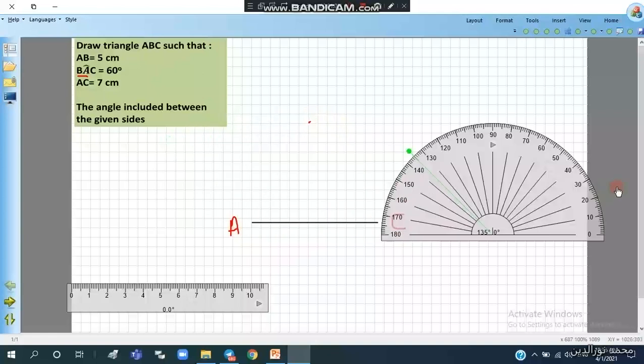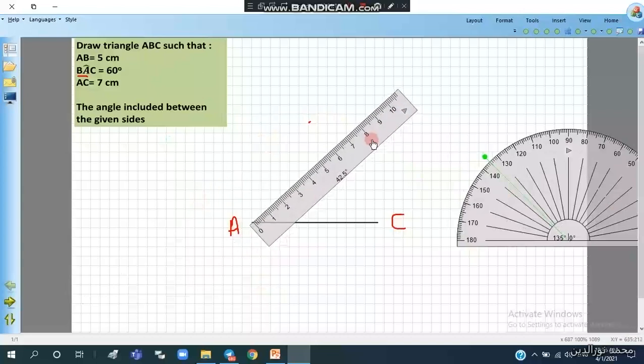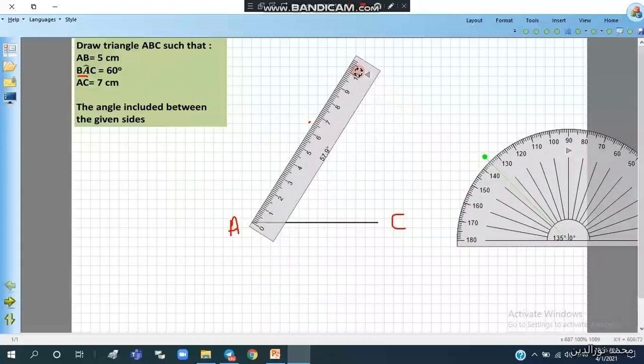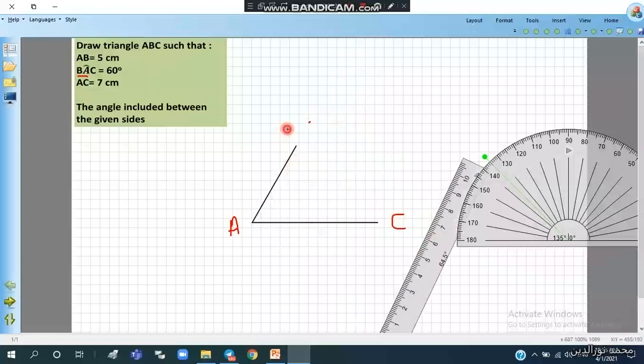And then I will draw the other side, and it will be the length of 5 cm. So like this, and then we draw the other side at 5 cm. Okay, we will measure 5 cm, and this is point B.